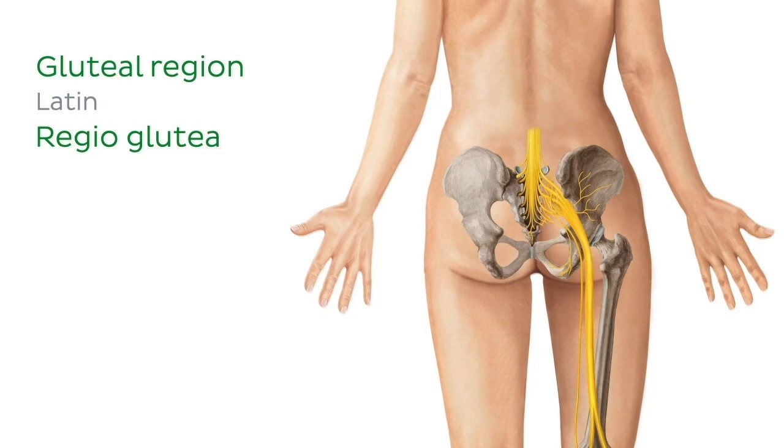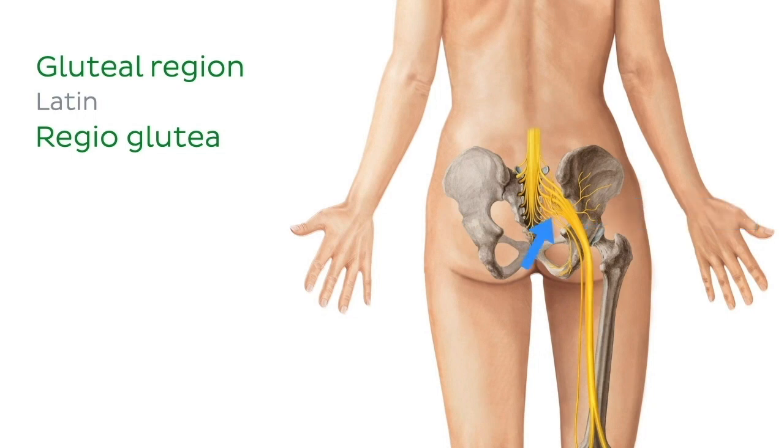The large nerve of the lower limb, the sciatic nerve, also travels through the gluteal region from the pelvis.